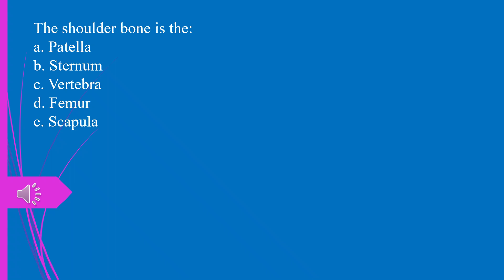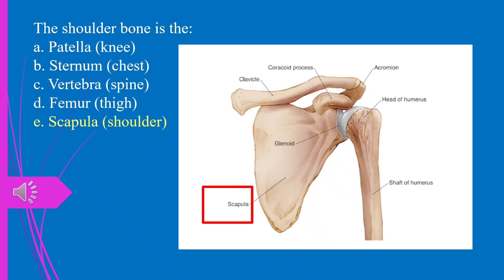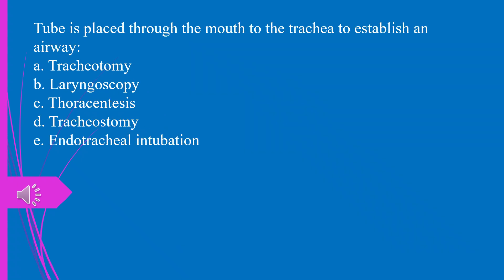Question 41. The shoulder bone is the: a) patella, b) sternum, c) vertebra, d) femur, e) scapula. The answer is e, scapula.